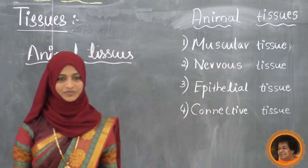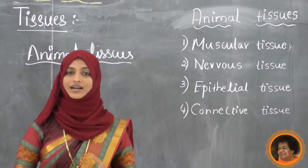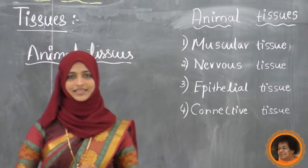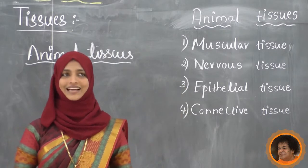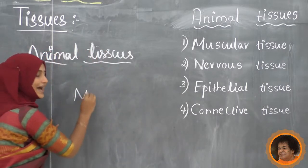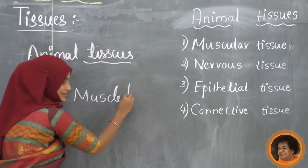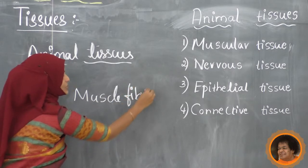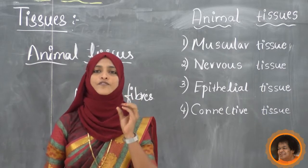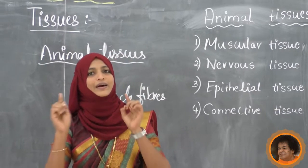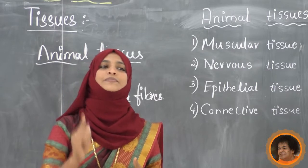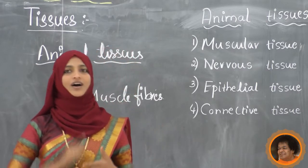Muscular tissue - muscle tissues are called as muscular tissues. Muscular tissues consist of elongated cells, called muscle fibers. Muscle tissues have muscle fibers. We already know that muscle tissues are responsible for the movement of our body and body parts.